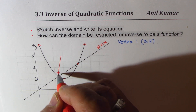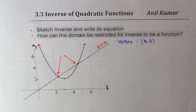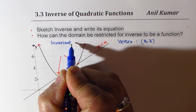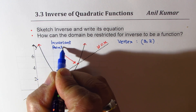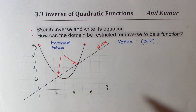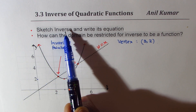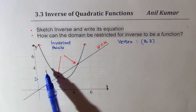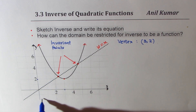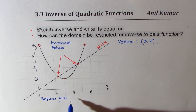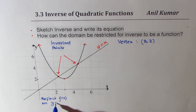These two invariant points will be common on the function as well as the inverse of the function. To sketch the inverse of a function, we have to reflect on y equals x. So the idea is to reflect f(x) on the line y equals x — it's kind of a mirror image.